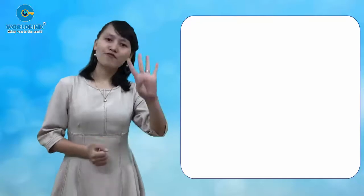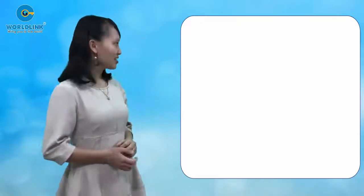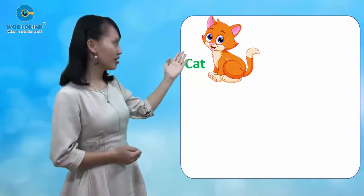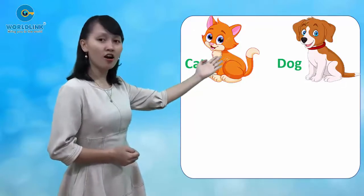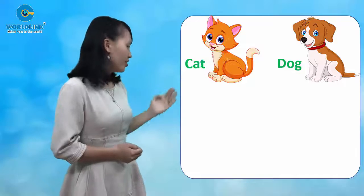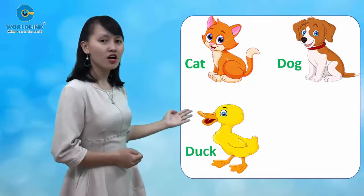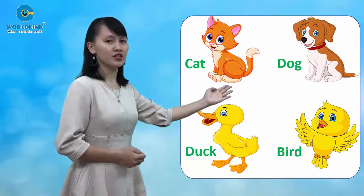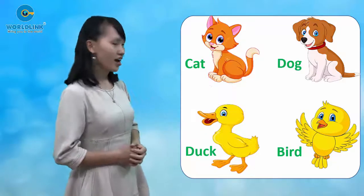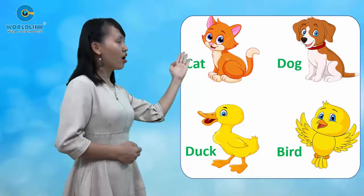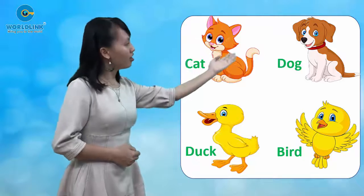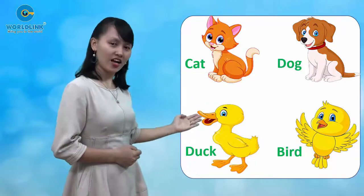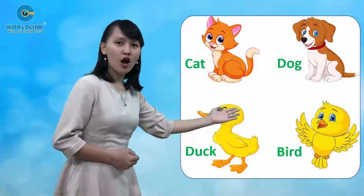So today we learned four animals. Let's see: the first one is a cat, the next one is a dog, the next one is a duck, and the last one is a bird. Okay, one more time: a cat, a dog, a duck, and a bird.